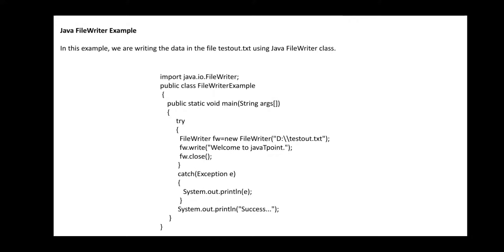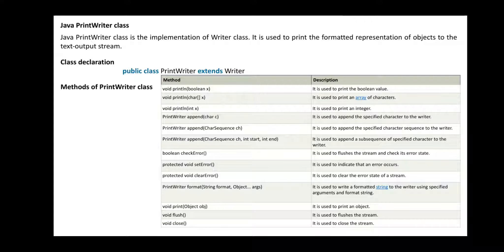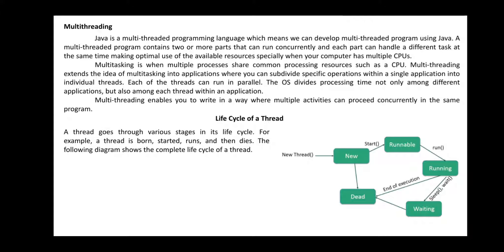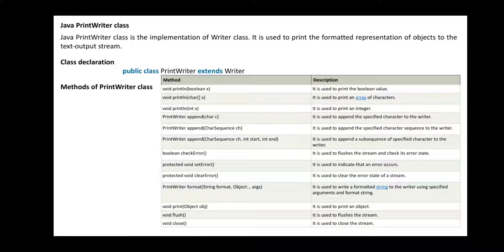Then we move to the last part — Java PrintWriter. PrintWriter is also a writing class used to represent objects to the text output screen, similar to a Writer class. It allows you to write without always using System.out.println — instead of compulsorily writing System.out.println, we can create our own object or class statement to write the information.